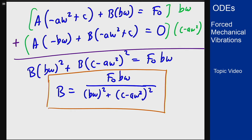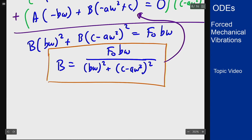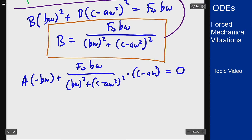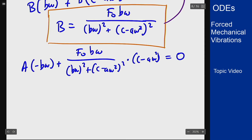Then I can take that and plug it back into the equation to get A times negative b omega plus f0 b omega over that denominator times c minus a omega squared equals zero. Moving terms and dividing through by b omega gives that A will be f0 times c minus a omega squared over that same denominator.